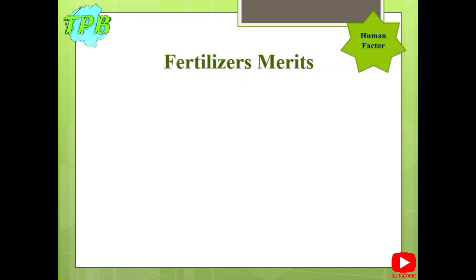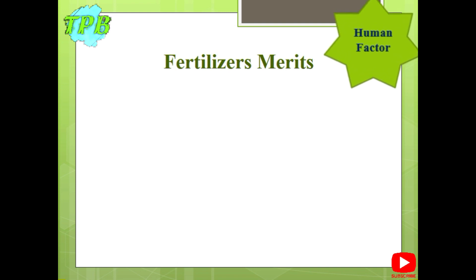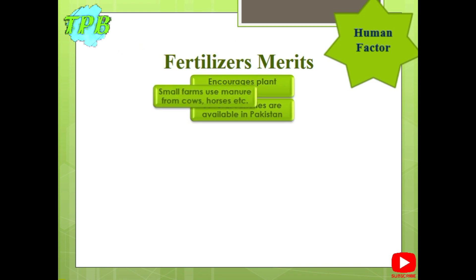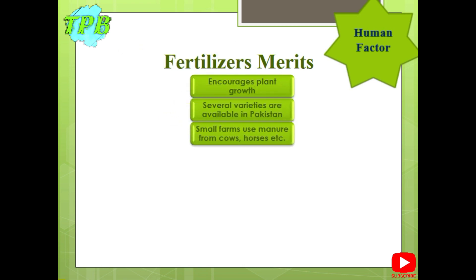Another human factor which affects farming in Pakistan is chemical fertilizers. Chemical fertilizers encourage plant growth. There are several varieties available in Pakistan, but small farms mostly use manure from cows or horses, which saves money on farm investment.